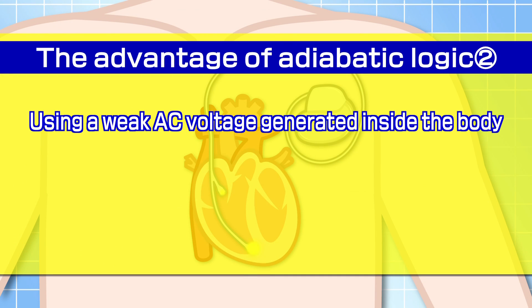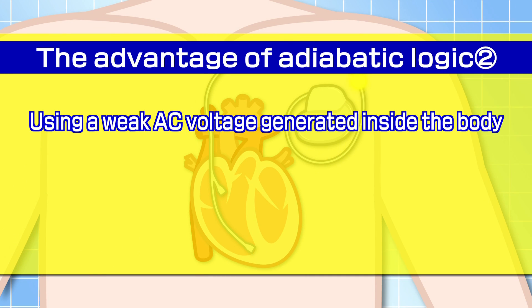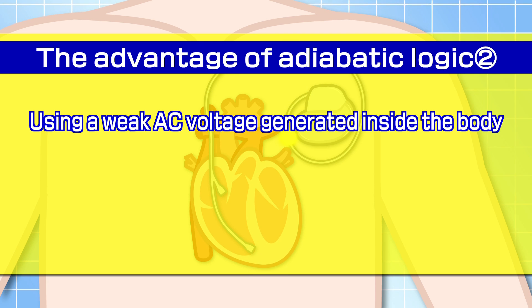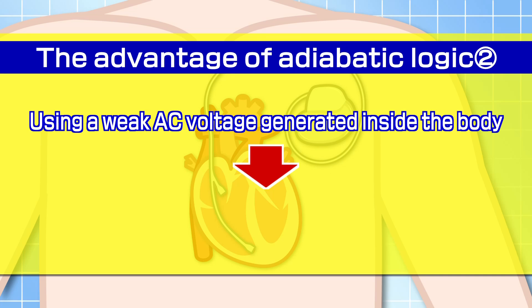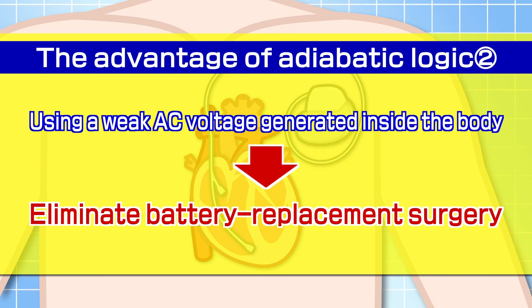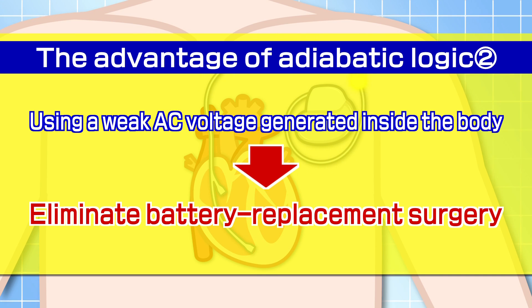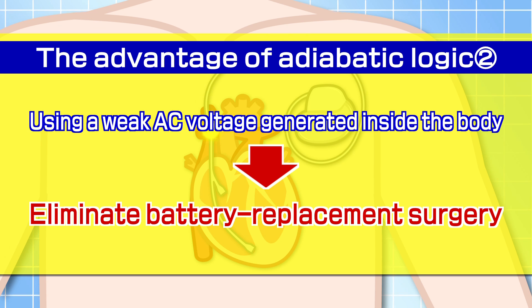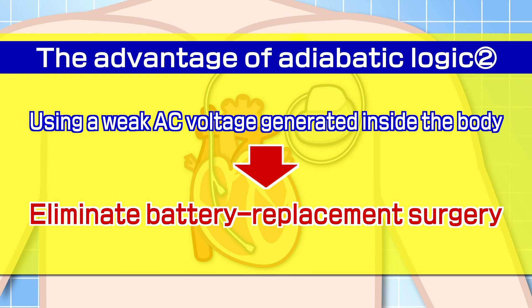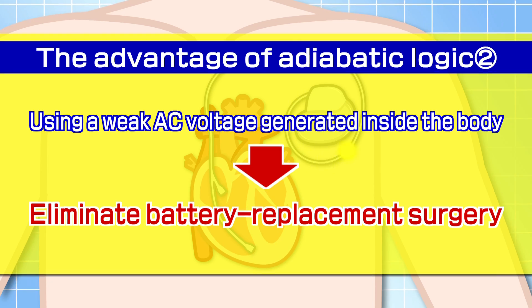Moreover, each heartbeat generates a very weak AC voltage of a few millivolts. If we use this power source for operating the circuit, there would be no need for replacement surgery as long as the person remains alive.